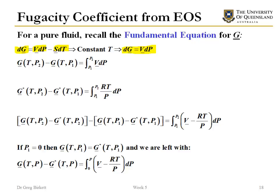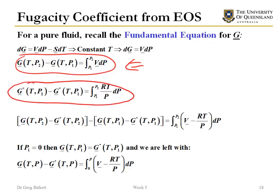If we look at the difference in Gibbs free energy between one state and another, then what we get is the integral of V dP. This is for a real gas. We can also do the same calculation for an ideal gas, where we've substituted in that the molar volume for an ideal gas is equal to RT/P.